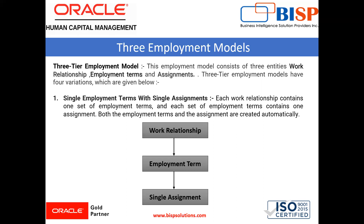The first is single employment term with single assignment. In this employment model, a work relationship contains one employment term and will have only one assignment at any point of time. The employment term and assignment are created automatically when you create a work relationship with an employer. By the diagram, there is one work relationship, one employment term beneath it, and a single assignment beneath the employment term.